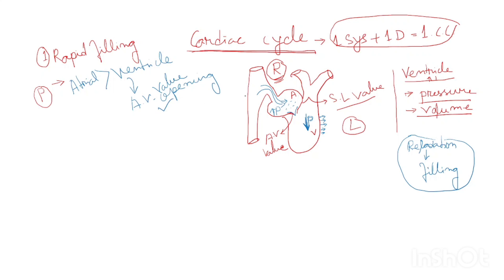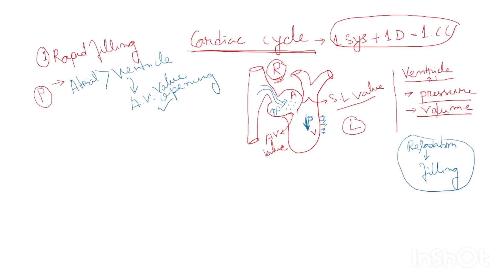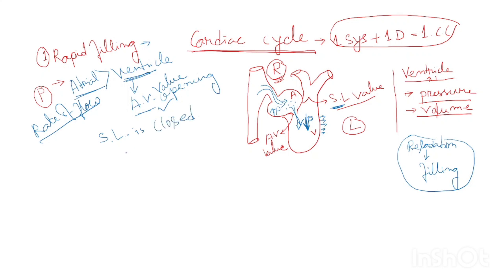As soon as the AV valve opens, blood moves from the atria to the ventricle rapidly. The rate of flow is rapid, and this phase is called rapid filling — it is filling of the ventricle rapidly. The atrial pressure is higher than ventricular pressure, the AV valve is open, and blood flows rapidly to the ventricle. The semilunar valve remains closed during rapid filling.